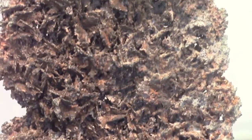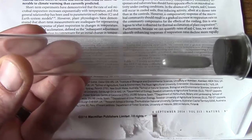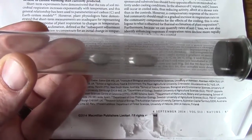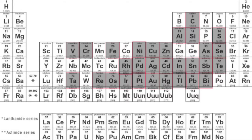As a quick rundown of the elements on the periodic table that can form crystallized minerals, we have aluminum, antimony, arsenic, bismuth, carbon, cadmium, chromium, copper, gold, indium, iron, iridium, lead, mercury, nickel, osmium, palladium, platinum, rhenium, rhodium, selenium, silver, silicon, sulfur, tantalum, tellurium, tin, titanium, vanadium, and zinc.